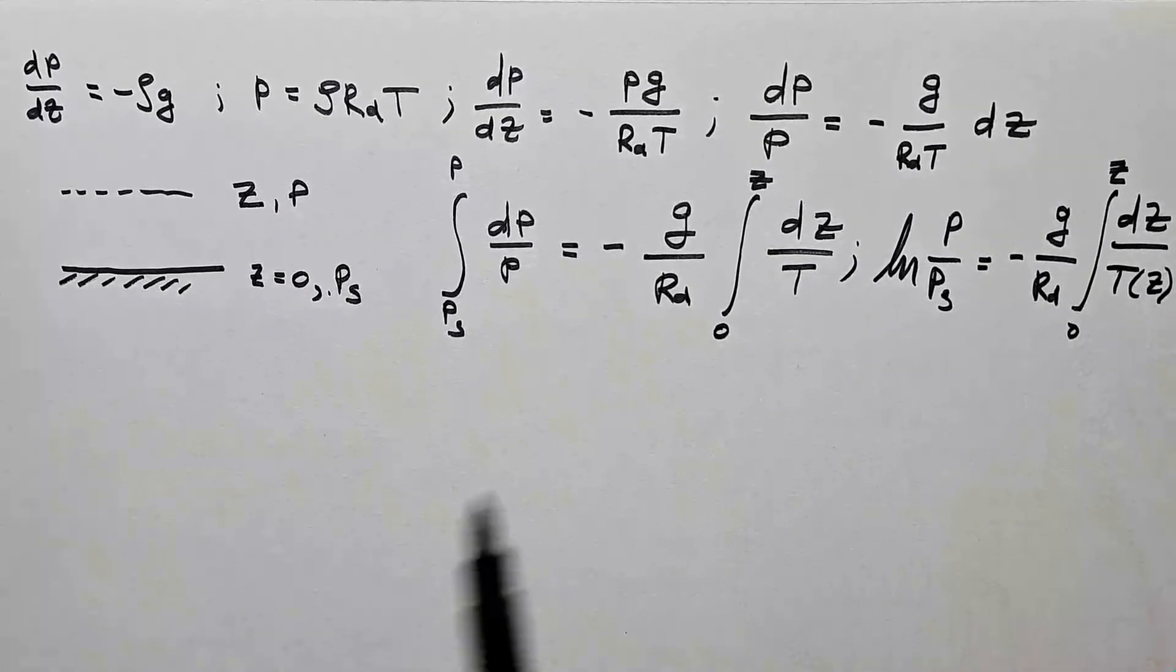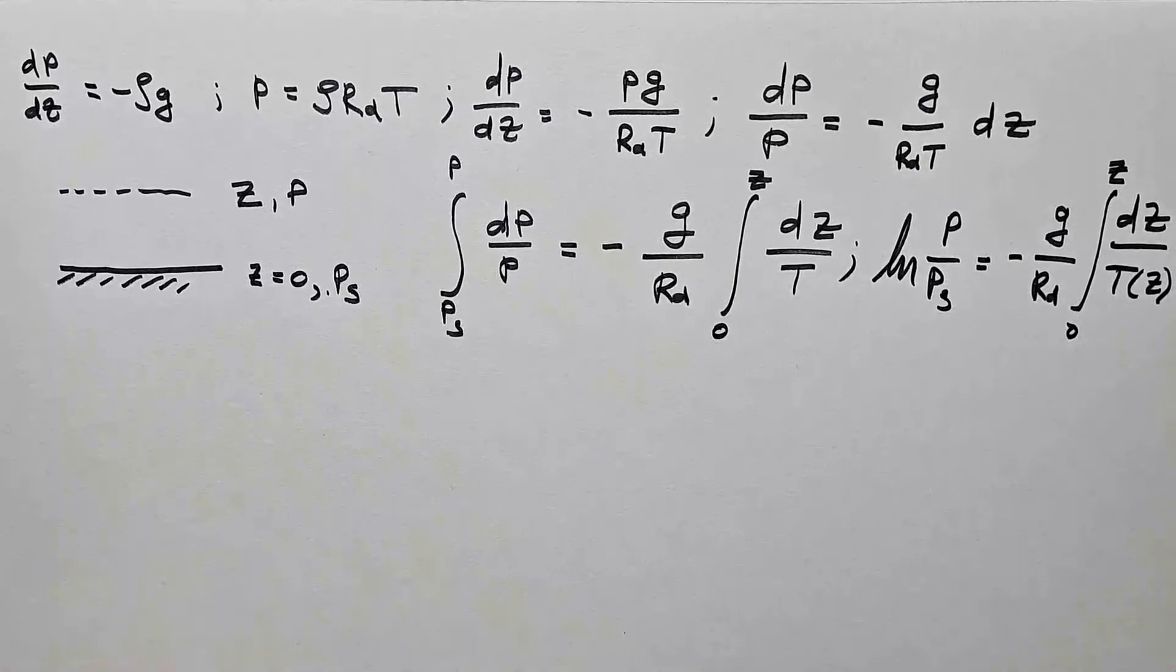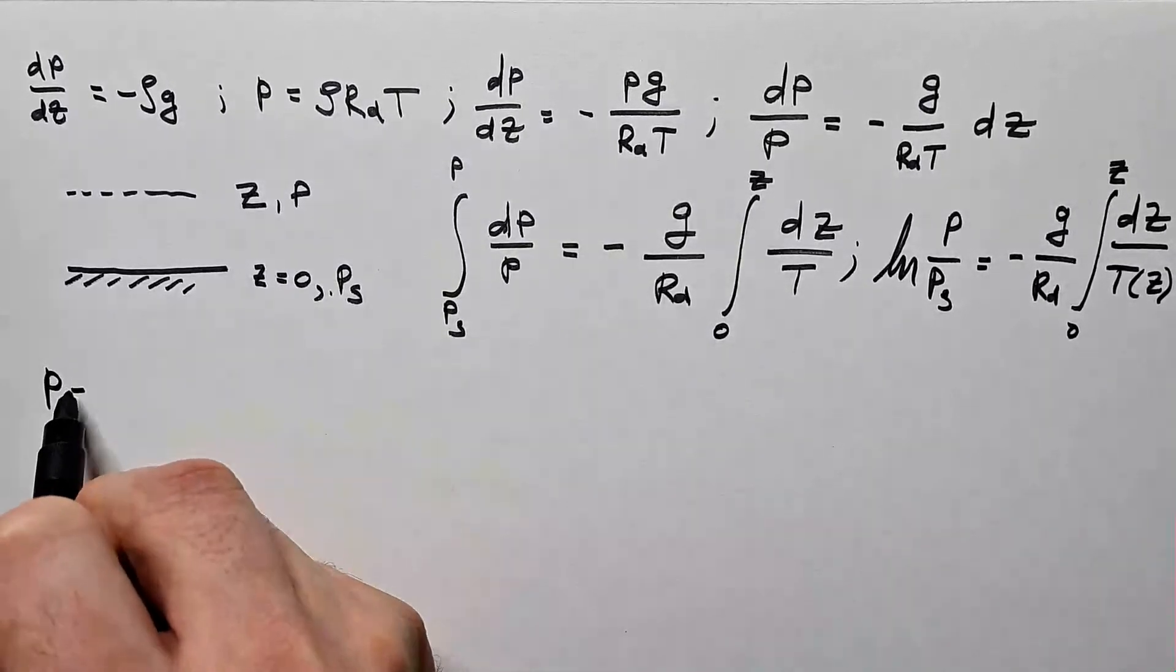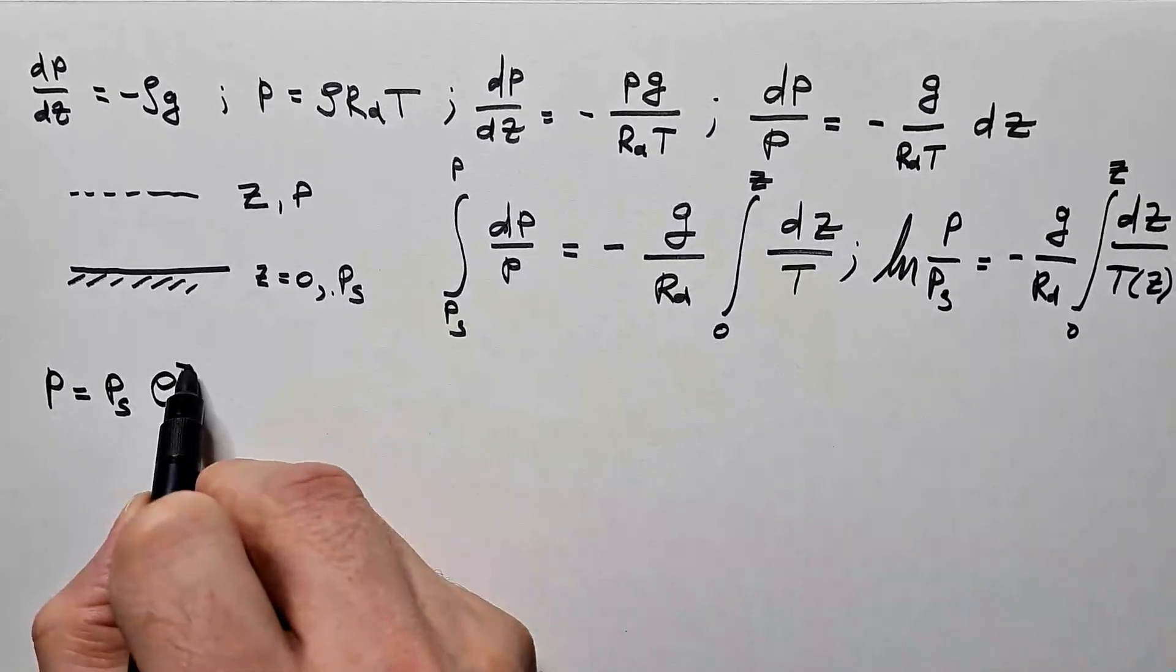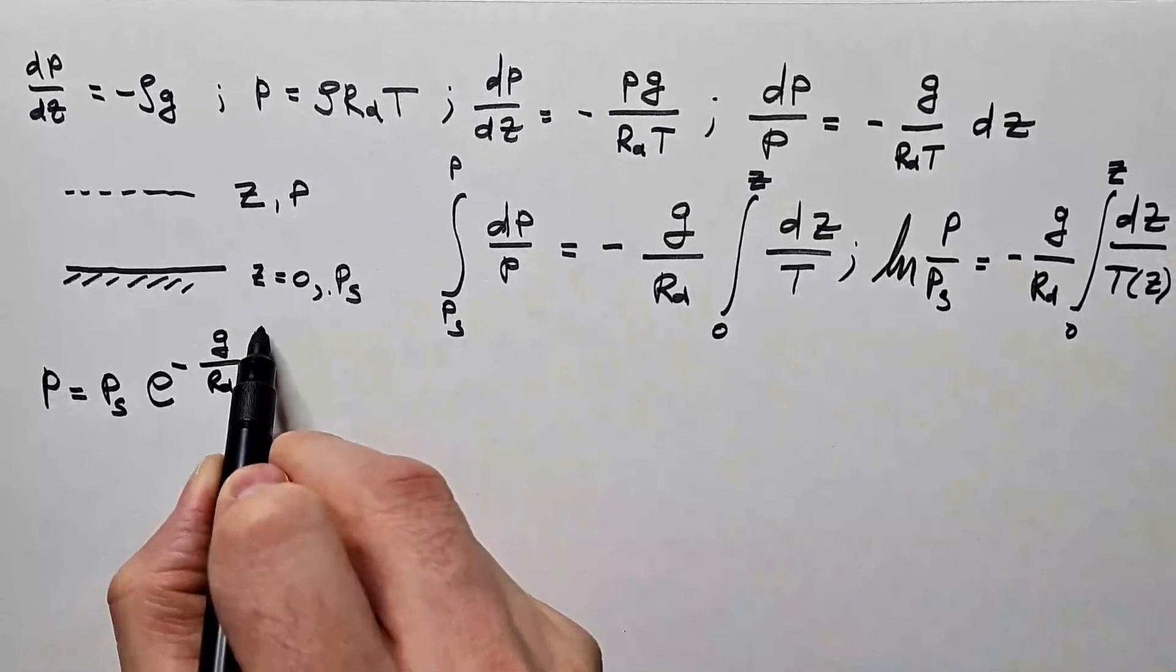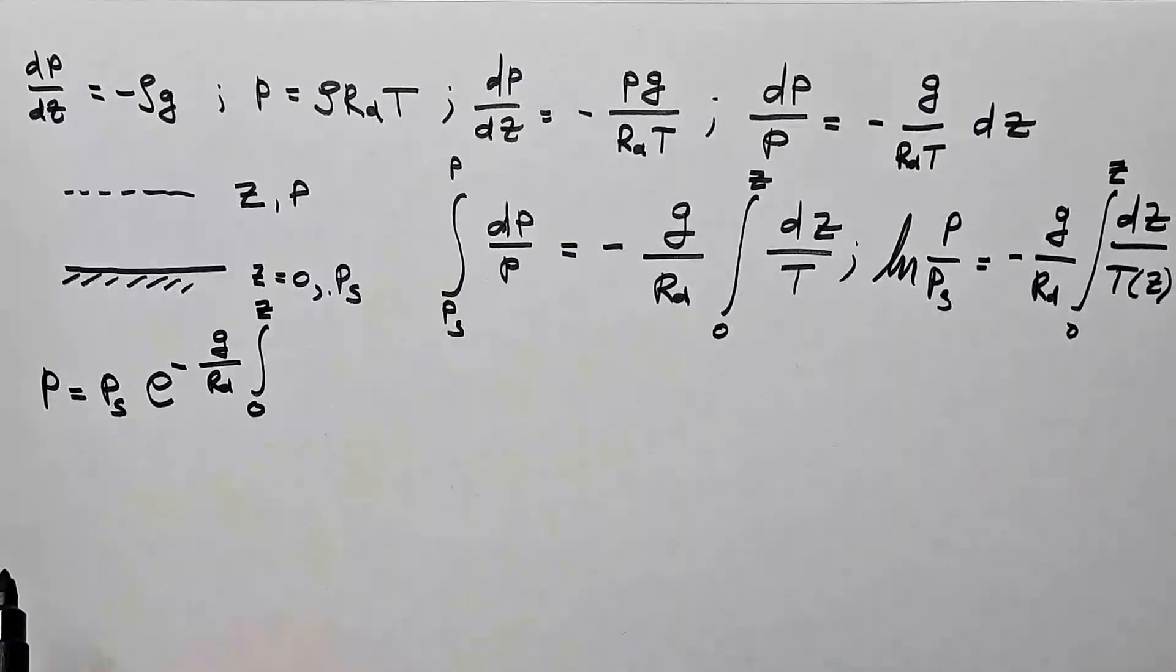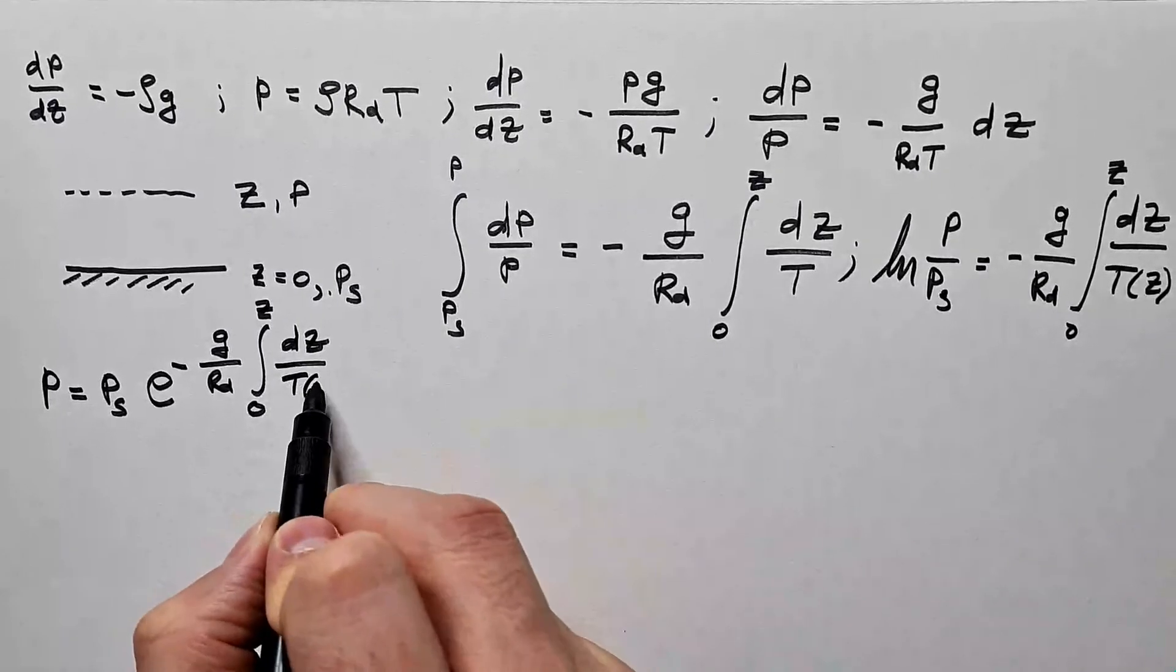So, we know it's function of height. If I run with exponential function through this equation, I will get that p equals ps e to minus g over Rd integral 0 to z dz over T as function of z.